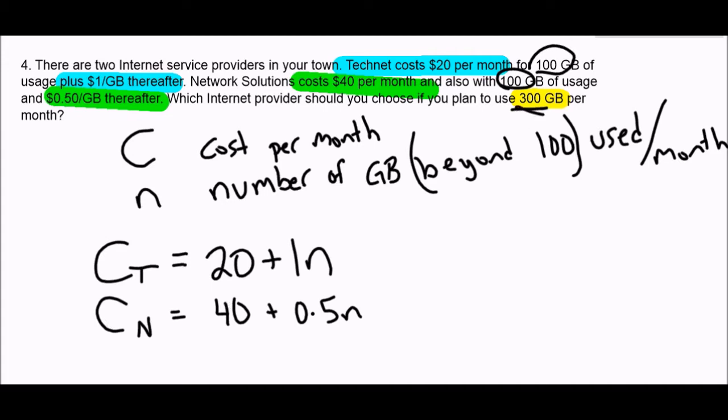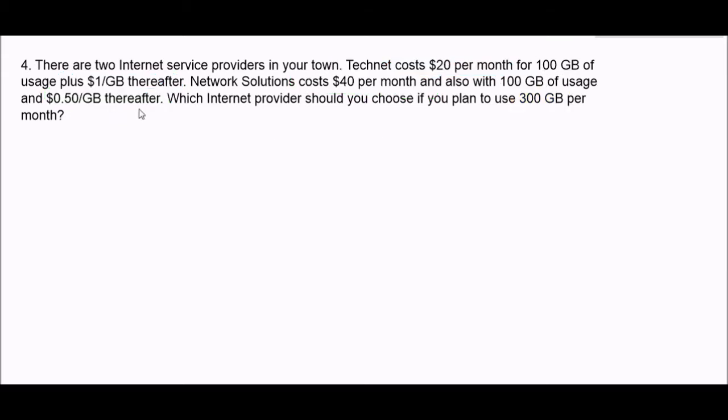So if I plan to use 300 gigabytes, which one's cheaper? Now certainly we could just substitute a value in for N. If I'm using 300 gigabytes, then that's 200 extra gigabytes that I'm going to have to pay for. So I could simply sub 200 in for N and calculate. And that would completely answer the question. But I think what the intention of this question was is to get you to solve this as a system of equations.